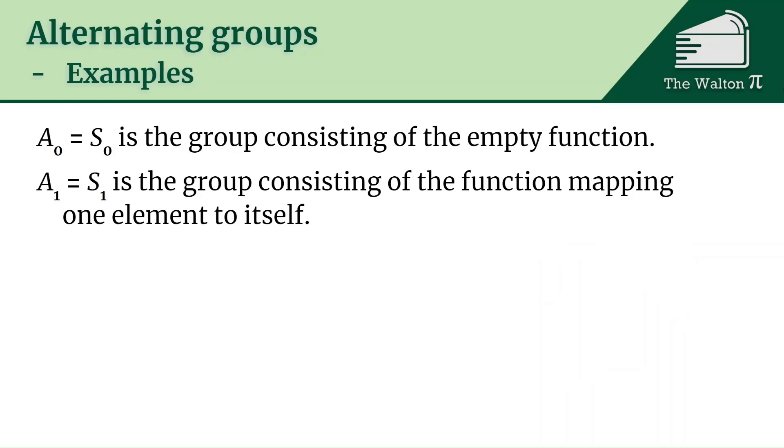Let's go over a couple examples. A_0, that is just S_0, so that's all even permutations on no elements and all permutations on no elements. You can't permute nothing, so that means this is the empty function. A_1 and S_1, how many ways can we permute one element? It just stays itself, so it's just the function that maps one element to itself.